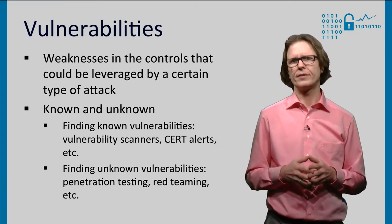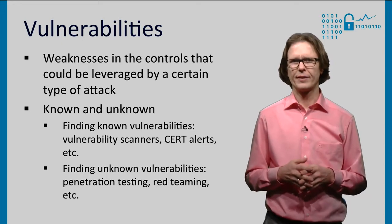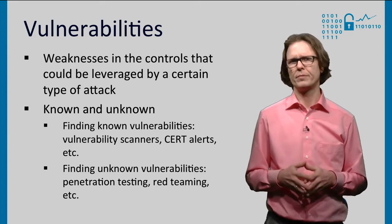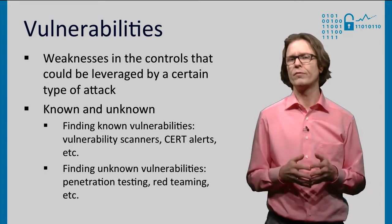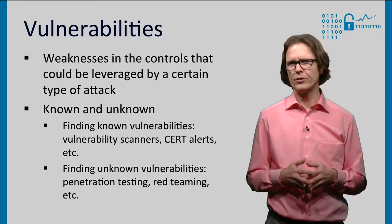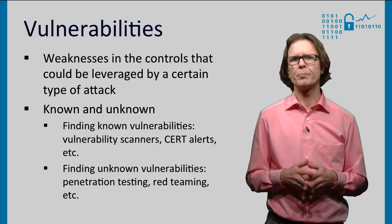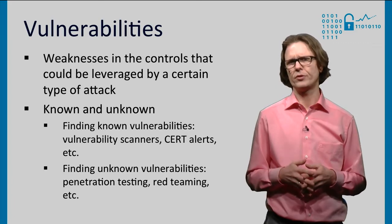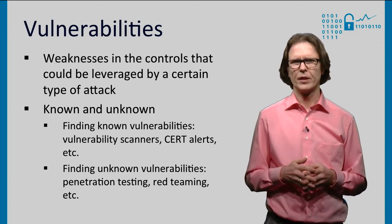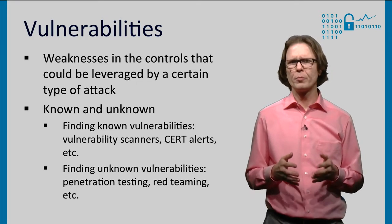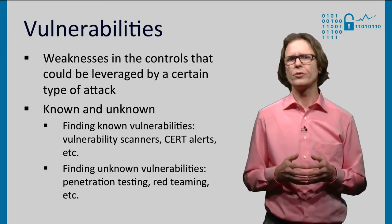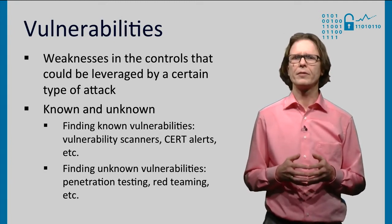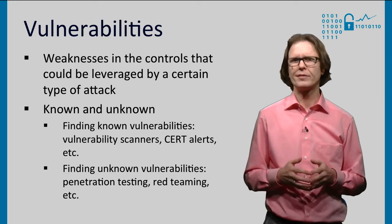Vulnerabilities are weaknesses in the controls that could be leveraged by a certain type of attack. The first step in identifying vulnerabilities is to analyze how the controls could fail. This could be the outcome of an audit, of automated tools like scanners, or of alerts sent out by computer emergency response teams. They may point to newly discovered weaknesses in your services or controls. These approaches all check whether known vulnerabilities are present in your systems. If you want to discover unknown vulnerabilities, you need a bit more ingenuity and creative effort. Typical techniques here are penetration testing or red teaming.